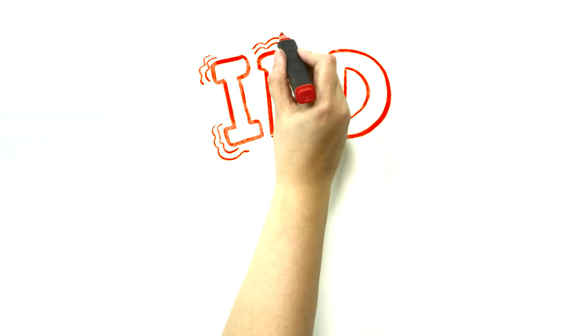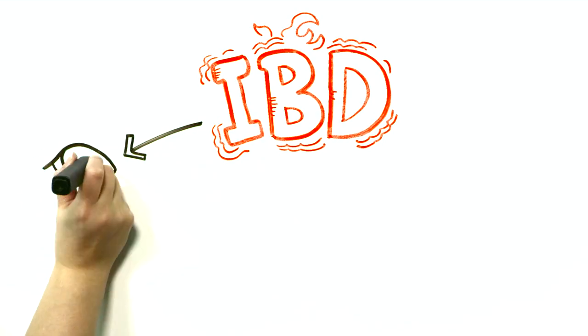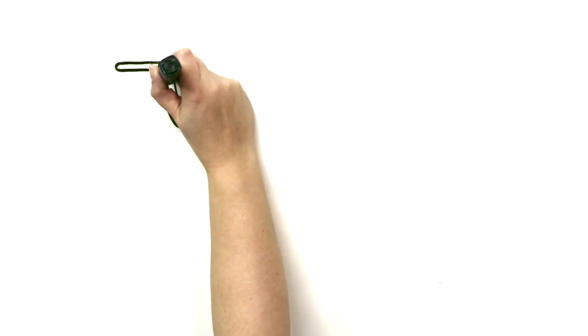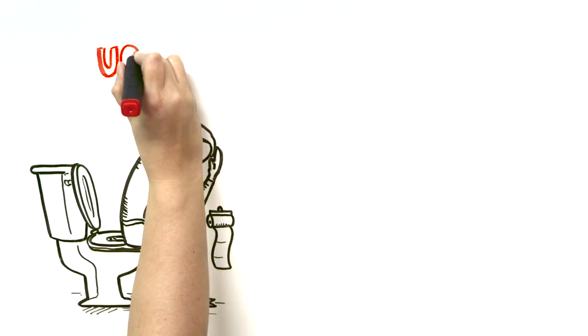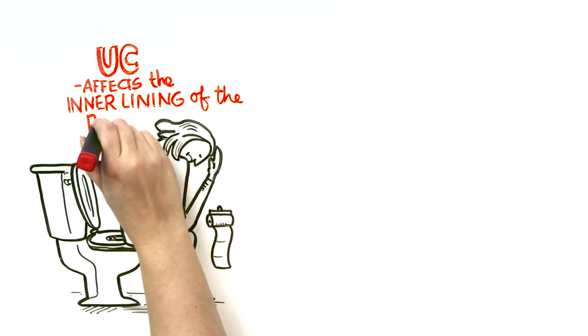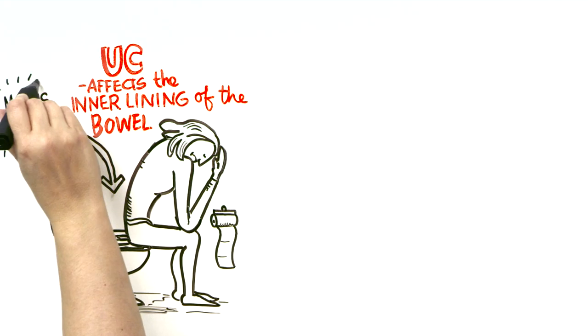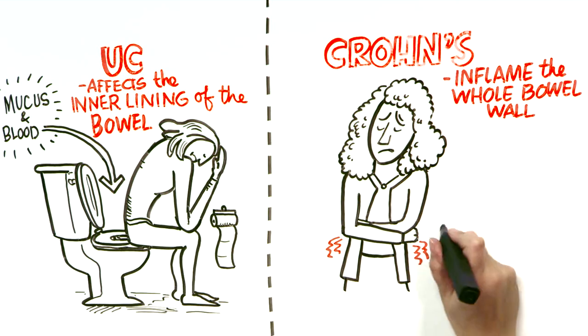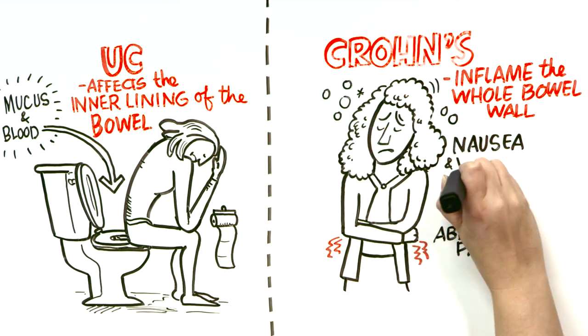IBD can occasionally affect or inflame other parts of your body such as your eyes, your skin, your liver, your joints. Other symptoms can be more specific. For example, because UC only affects the inner lining of the bowel we tend to see mucus and blood in the stool, whereas Crohn's can inflame the whole bowel wall. So there may be blood but also significant abdominal pain, nausea and vomiting.